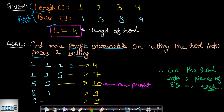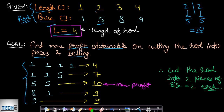We are required to find the maximum profit obtainable by cutting the rod into pieces and selling them. For example, you can take a rod of length 4 and divide it into two pieces of length 2, giving a profit of 5 plus 5, so the total profit is 10. Alternatively, you can divide it into 4 parts of length 1, giving a profit of 1+1+1+1 which equals 4. You can also divide it into two parts of length 1 and one part of length 2, giving profit of 1+1+5 which equals 7.